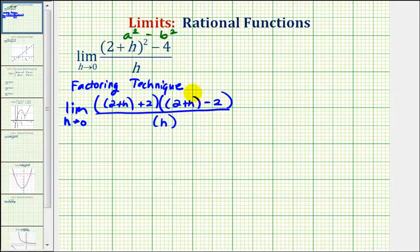And now we're going to simplify the numerator. So we'll have the limit as h approaches zero. Here we'll have two plus h plus two. That's going to be one factor of h plus four. Here we have two plus h minus two. Well, two minus two is equal to zero. So this simplifies to one factor of h divided by h.